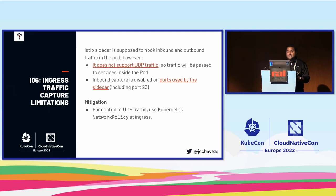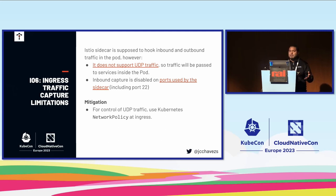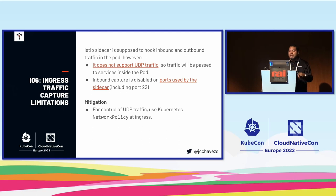Sixth is ingress traffic capture limitation. Istio proxy doesn't support UDP traffic, so all UDP traffic bypasses the proxy and goes directly to upstream. Some inbound capture is also disabled on ports used by the sidecar, not by default. To control UDP traffic at ingress, you need to use Kubernetes network policies. These are like firewall rules that can be implemented at namespace level, pod-based, namespace-based, or IP-based, and multiple policies can be applied together.